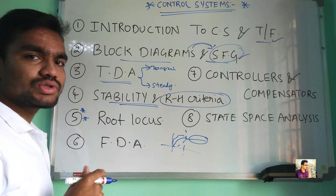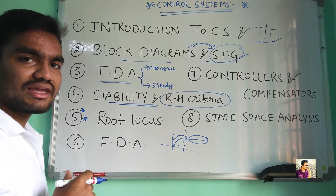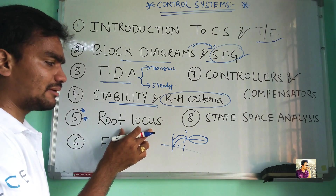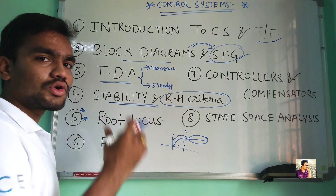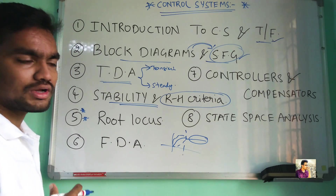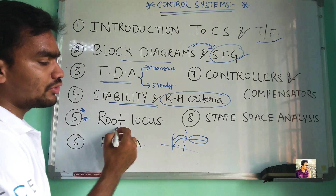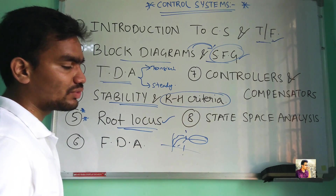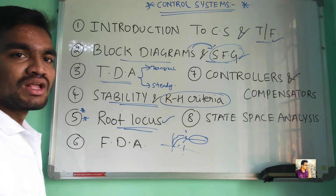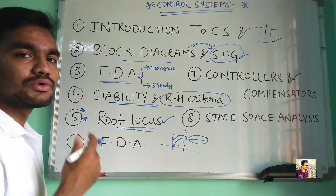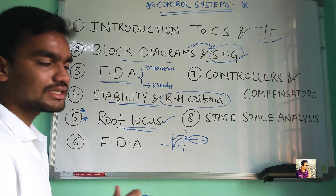That is root locus — we are going to see the values of system gain for which the system will be stable, and we are going to draw the plots on root locus. We are going to spend some more time on this, which is very important. There is a series of rules and we are going to deal with root locus step by step.